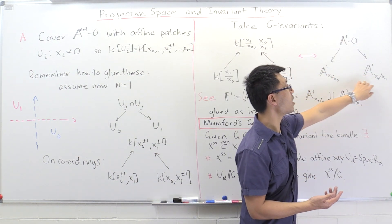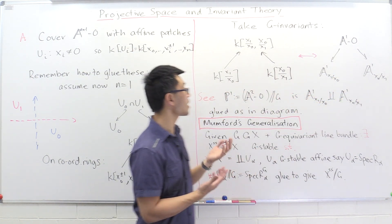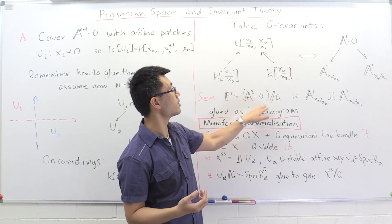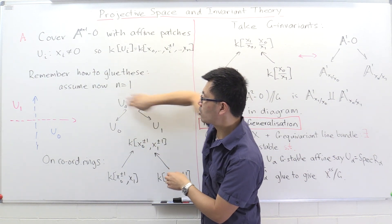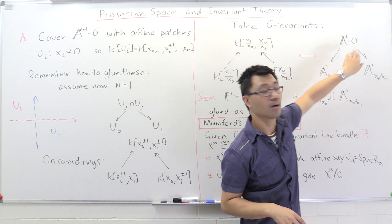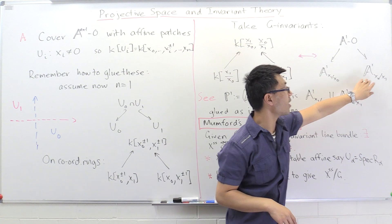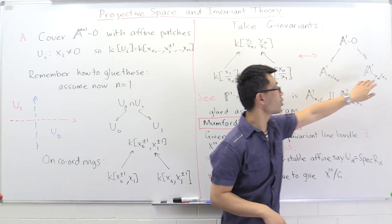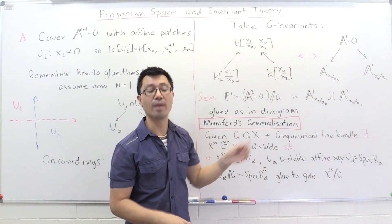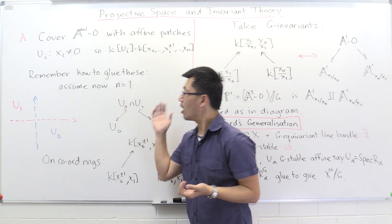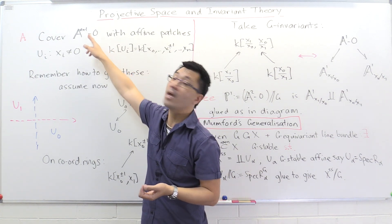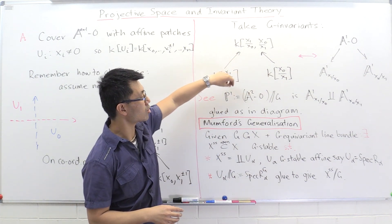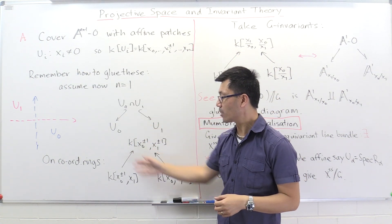This gives us a way to glue the two copies of A^1 together. The quotient — which we define as P^1 — is obtained by taking these two affine lines as disjoint and gluing them together according to this diagram. This is in fact the usual construction of P^1. For n > 1, the same procedure with more patches gives P^n, showing exactly how the construction matches with invariant theory.